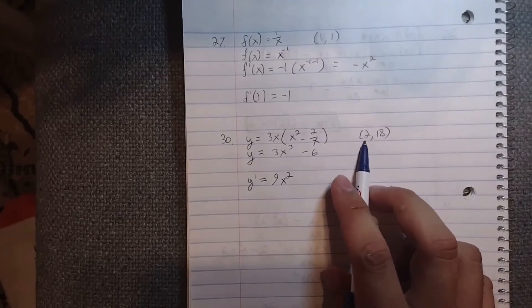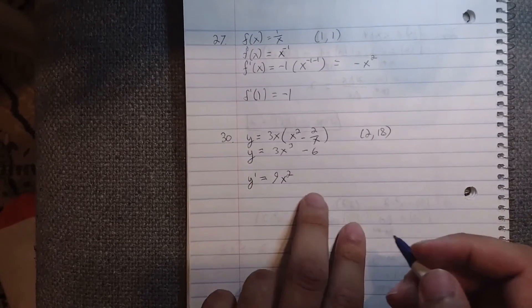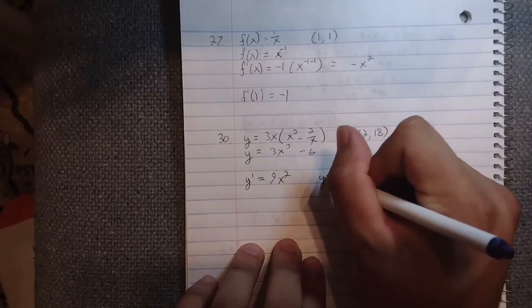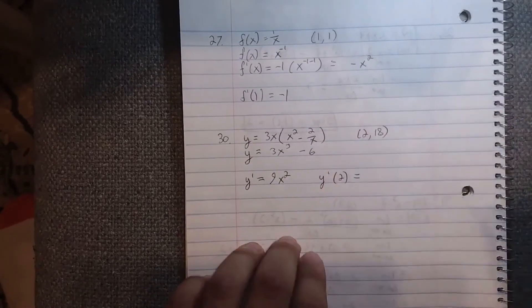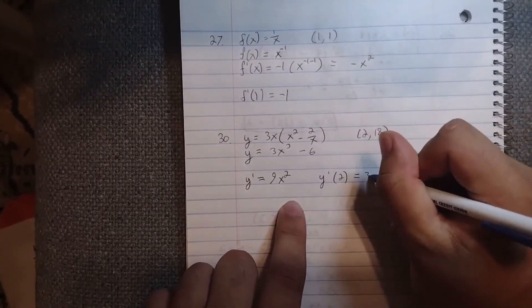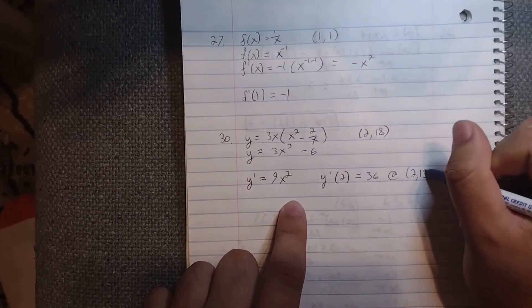If we plug in this indicated point, x = 2 and y = 18, to find the slope, we find that y'(2) equals—2 squared is 4, 4 times 9 is 36—so the slope is 36 at (2, 18).